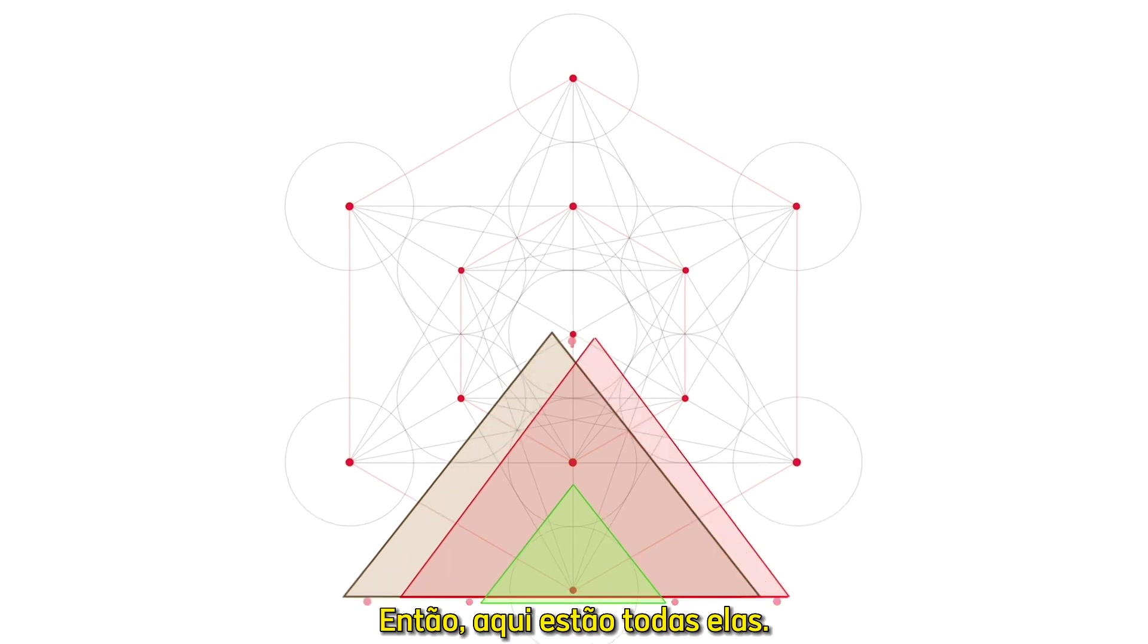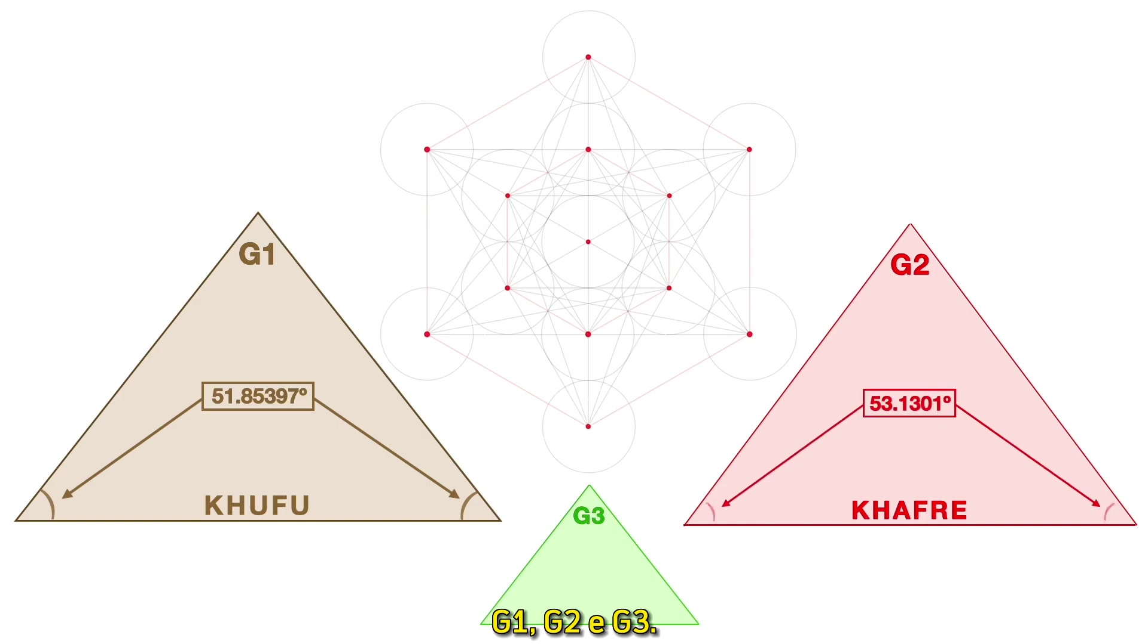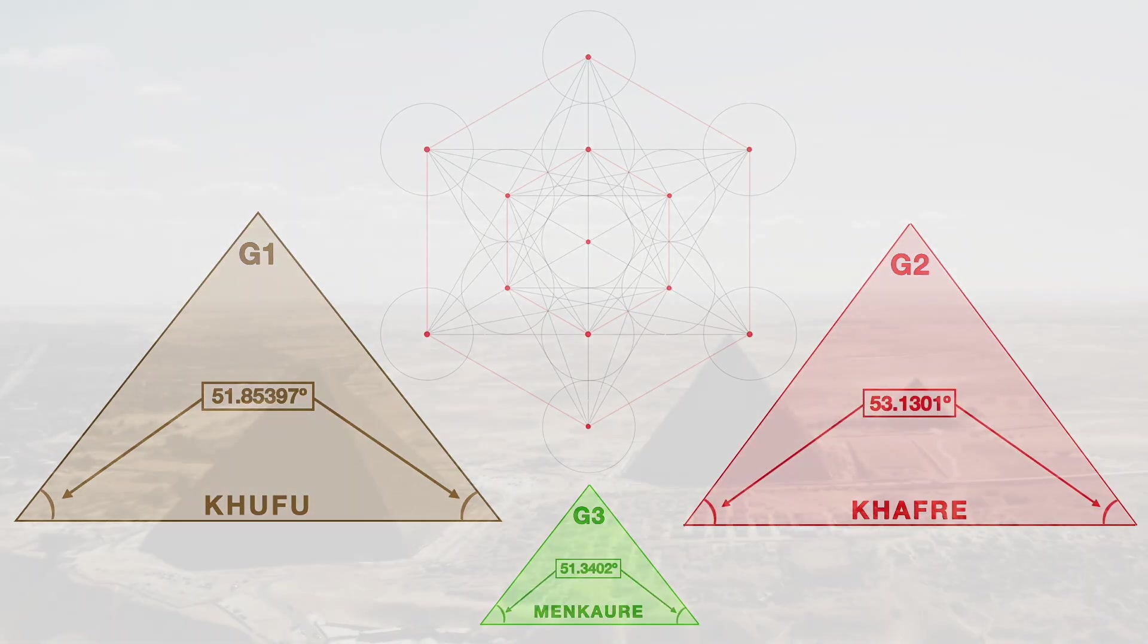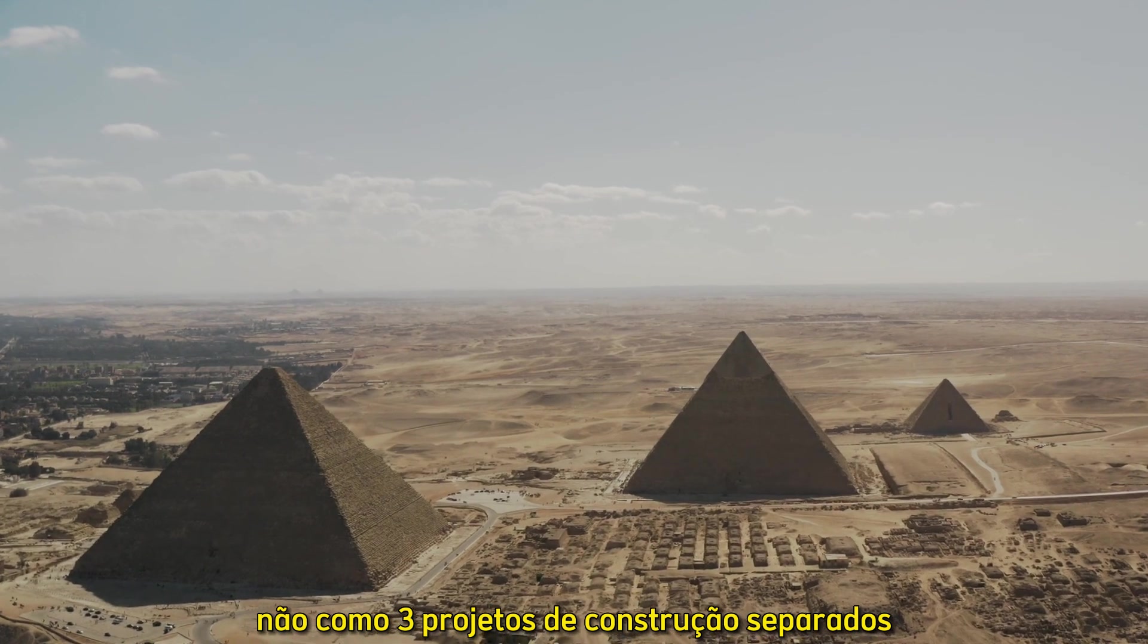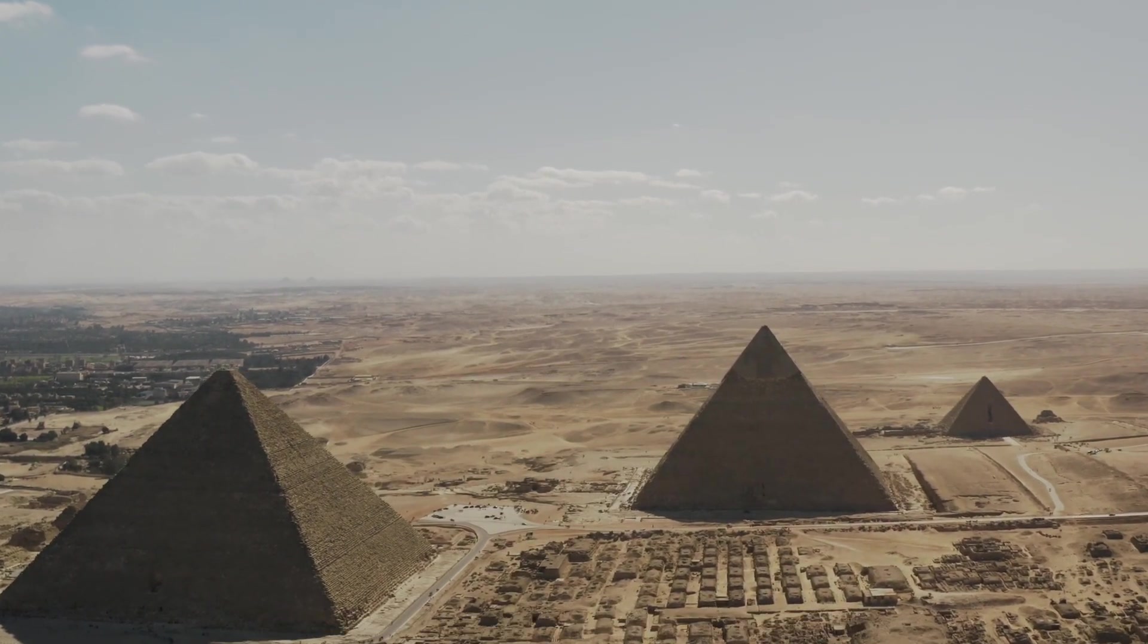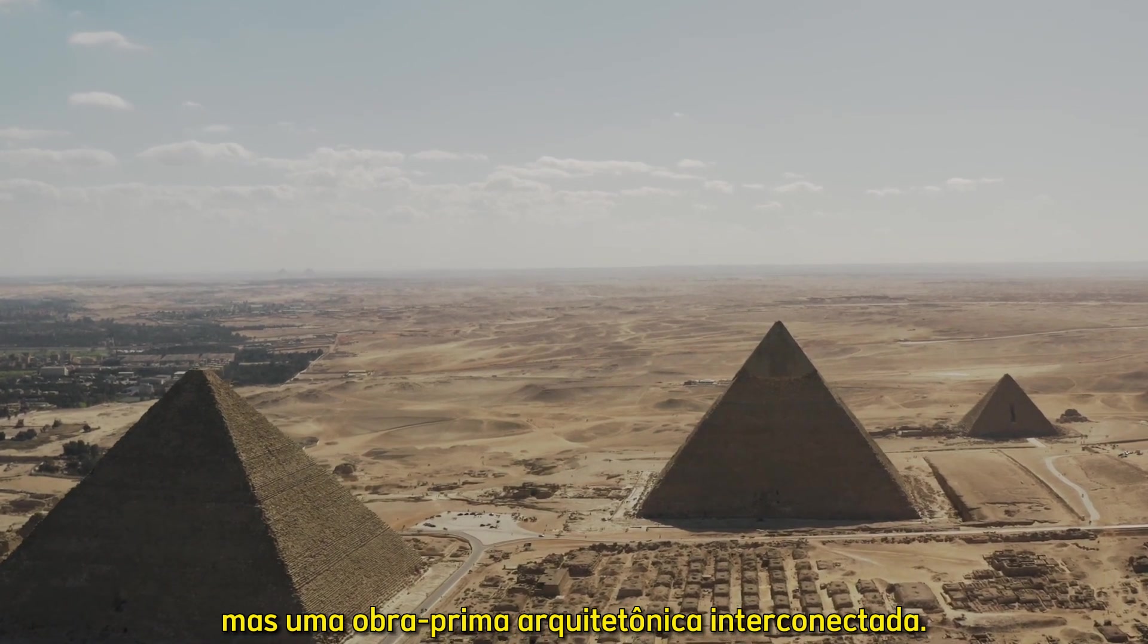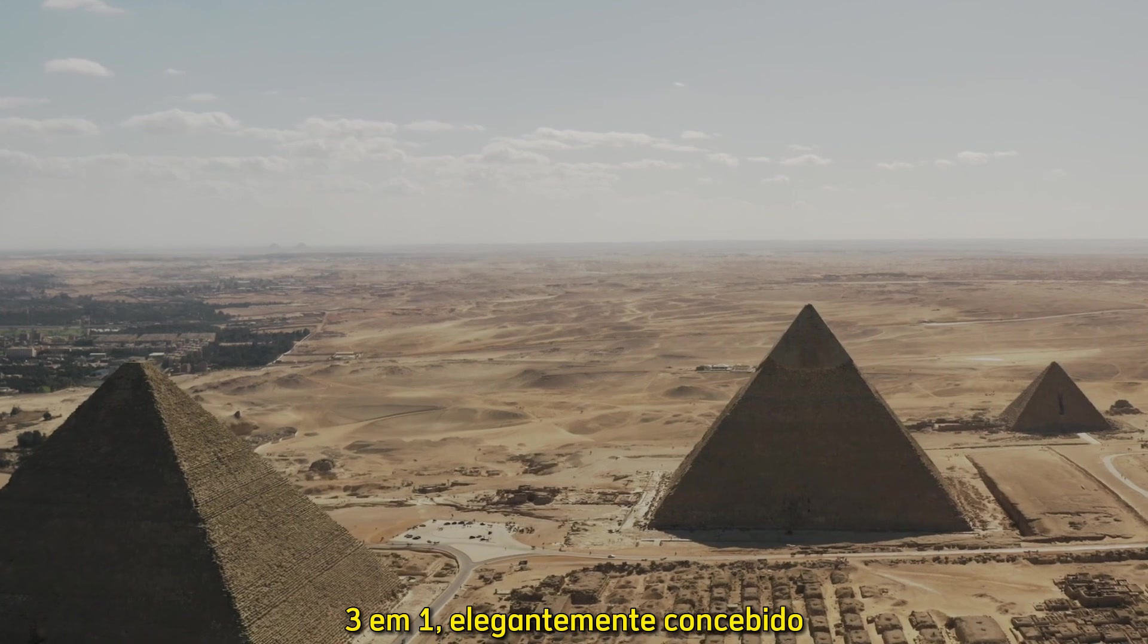So here they all are. G1, G2, and G3. Undeniably designed not as three separate building projects by a continuing line of dynastic pharaohs, but one interconnected architectural masterpiece. Three in one.